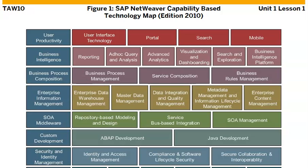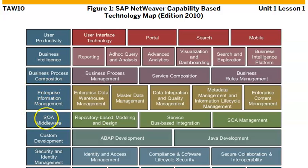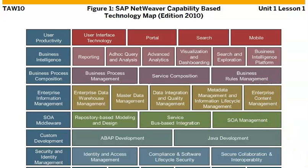We also have business intelligence and enterprise information management — a lot of things are integrated here and we can choose any one of them. When it comes to enterprise information management, we have enterprise data warehouse management, master data management, data integration and quality management, metadata management, and enterprise content management. You can choose any of these offerings; it's not mandatory to select all of them.